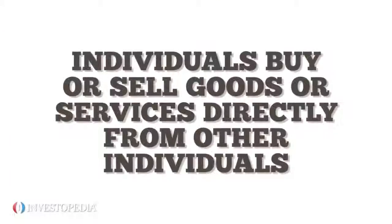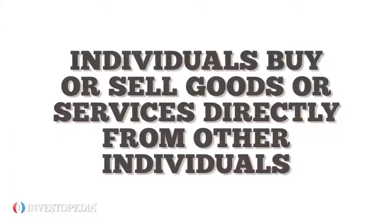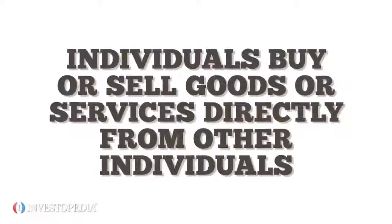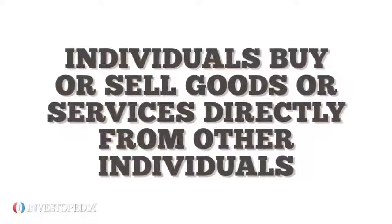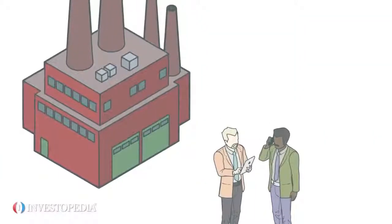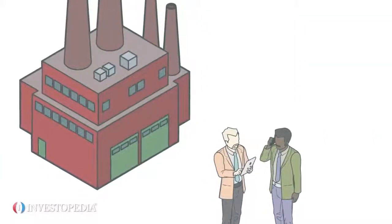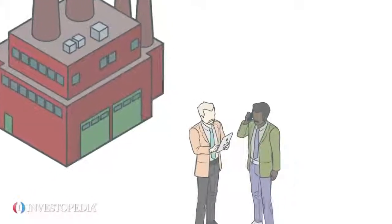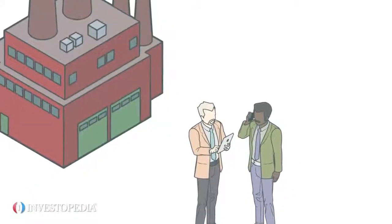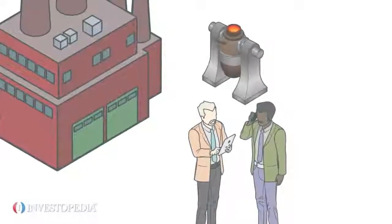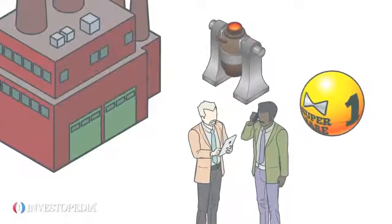In a peer-to-peer economy, individuals buy or sell goods or services directly from other individuals. Peer-to-peer transactions occur without intermediation from a third party or another business. The producer or seller owns the tools of production and the finished product.